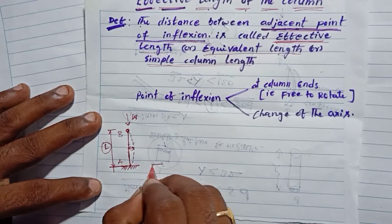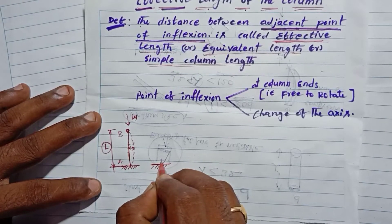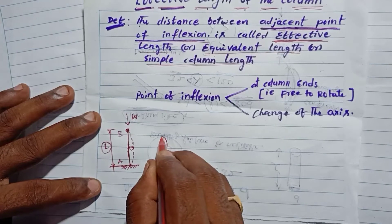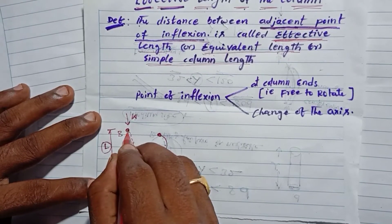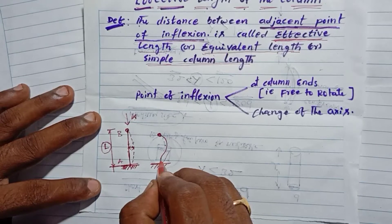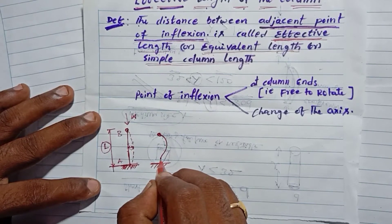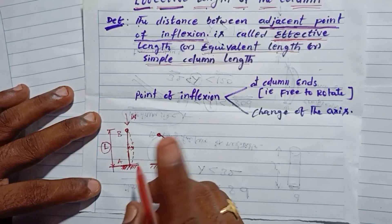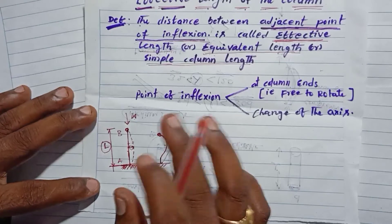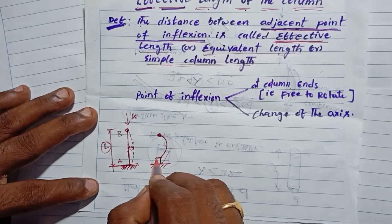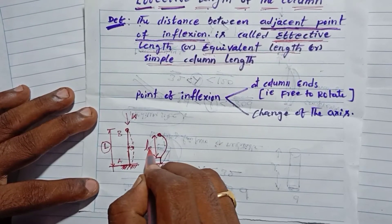For example, at a fixed support the column cannot directly rotate — it remains straight initially. But under load, buckling occurs. So this is the buckling failure of the column. One end is fixed, the other end is pinned. In the initial state the column is straight, but then the failure starts. So this length that is subject to failure we call the effective length.